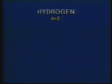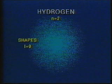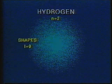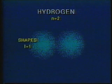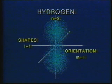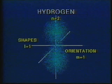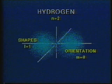When N equals two, two shapes are possible: L equals zero and L equals one. This second shape can have several orientations in space — M equals one, M equals zero, and M equals minus one.